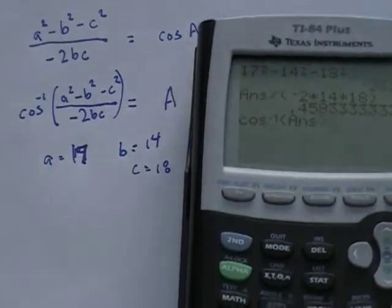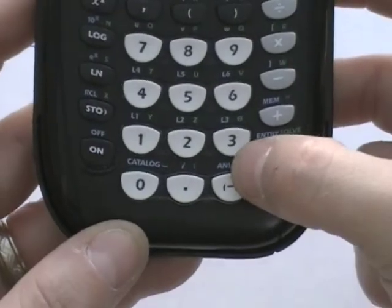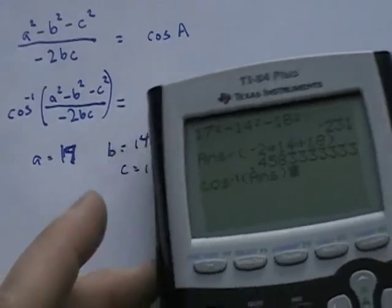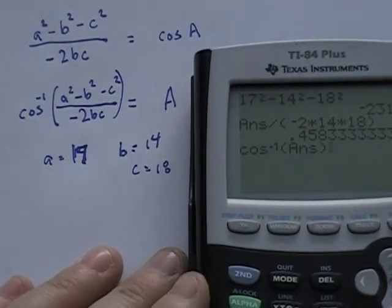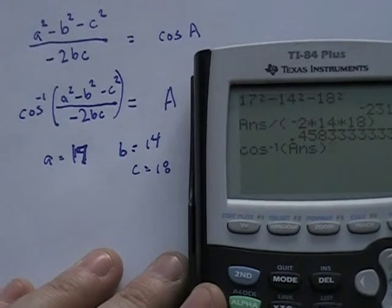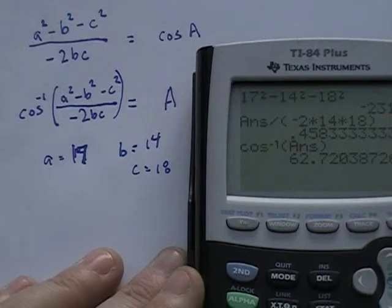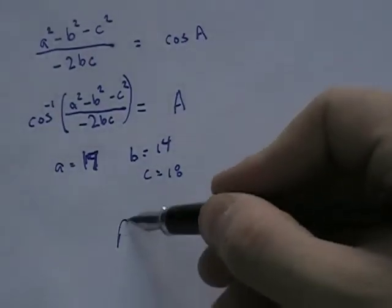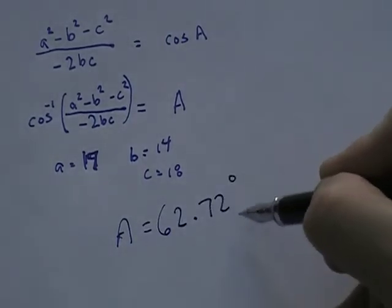And again, if you haven't seen my other videos where I talk about this, this answer key on a TI-84-83 is right above the minus sign. On a lot of scientific calculators, it's right above the equals or the enter button. A really handy little thing so you don't have to retype stuff. And I get an answer of 62.72. And so angle A is equal to 62.72 degrees.